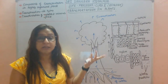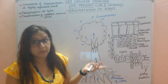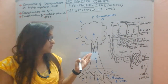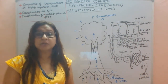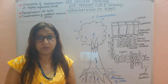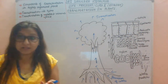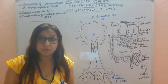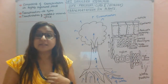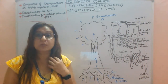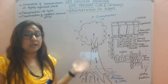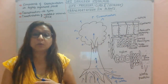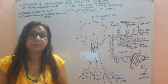In plants, the medium of transportation is water. There are two types of transportation: short distance transportation and long distance transportation. Short distance transportation takes place through the process of diffusion, where gases like CO2 and oxygen get diffused. In long distance transportation, water and minerals get transported to the different parts of the plant.